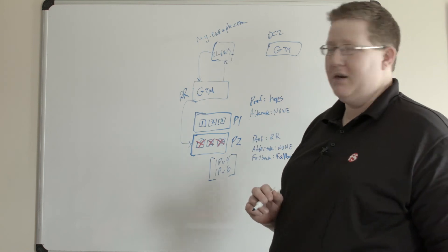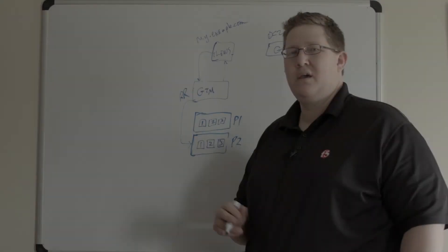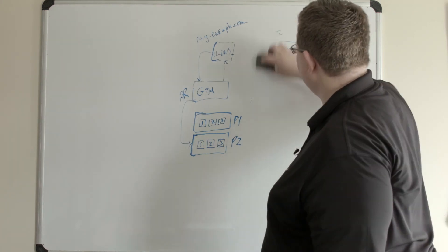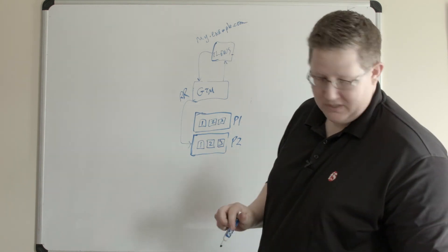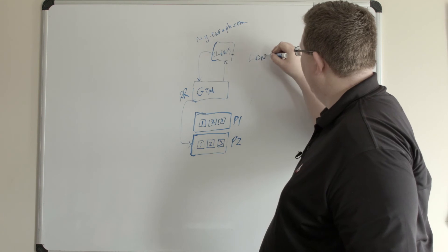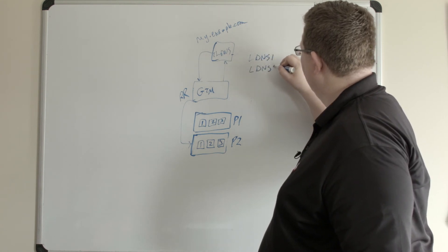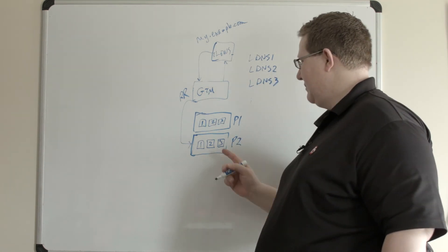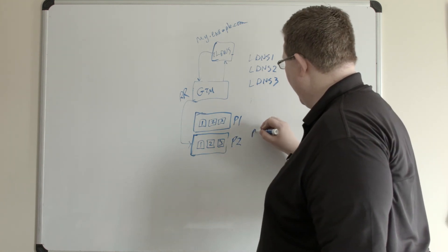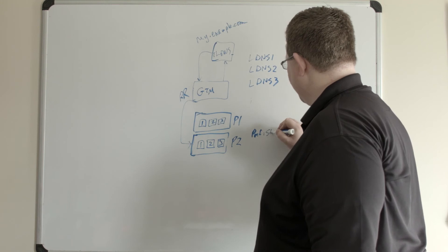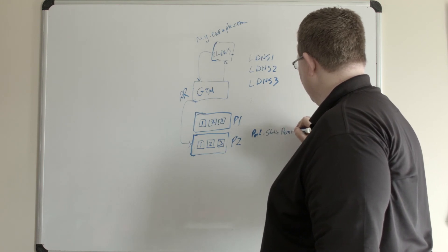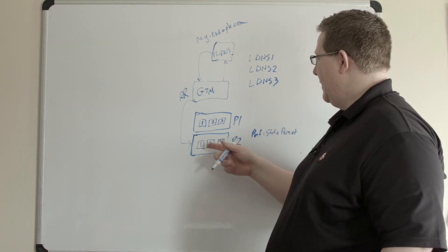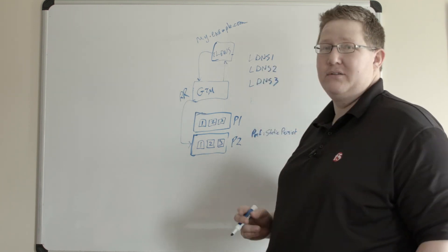The final method we'll talk about today is static persist. What static persist allows you to do is to persist an LDNS server to one of your VIPs in the pool. Let's say we have three LDNS servers connecting to this pool, and on this pool my preferred method is static persist.